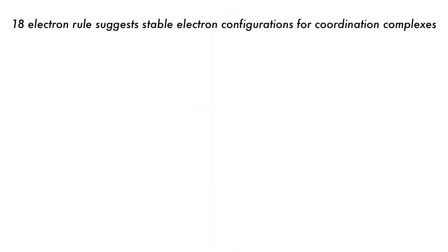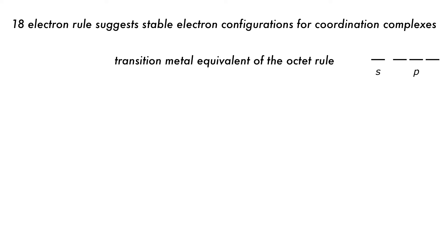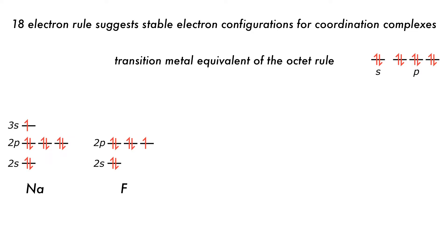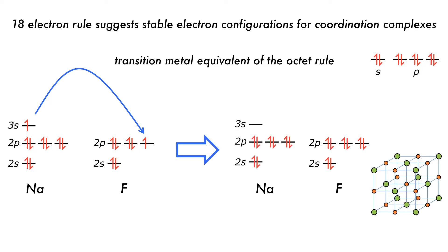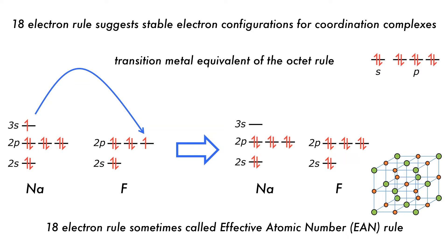The 18 electron rule is the transition metal equivalent of the octet rule. The octet rule is for 2p elements that have a valence orbital configuration consisting of an s orbital and three p orbitals. These four valence orbitals can contain eight electrons, meaning these elements will be most stable when they achieve a noble element configuration of eight electrons around the central atom. This is a key driving force in the formation of compounds such as sodium fluoride, where electron transfer means that the fluoride and sodium ions both get full valences.